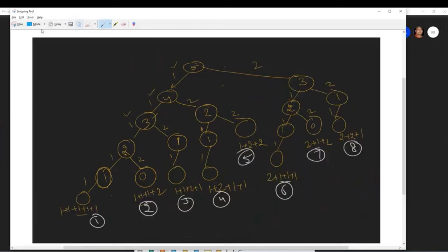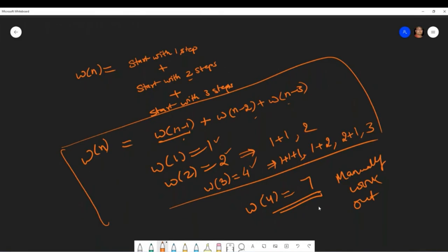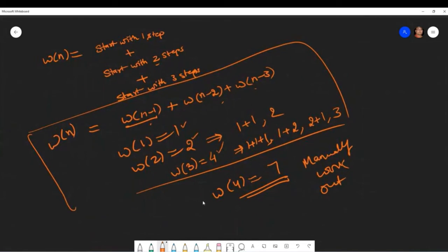For four, I'm getting six. It's one-one-one-one, then one-one-two, then one-two-one. Is there anything else starting with one? One plus three.